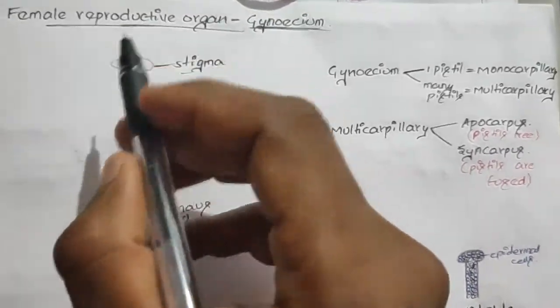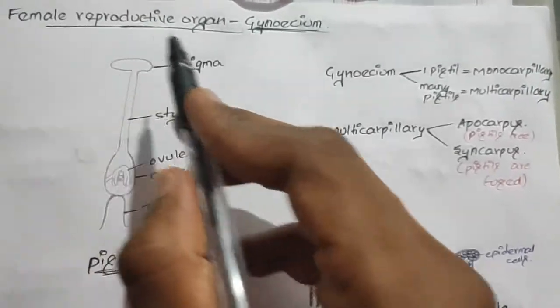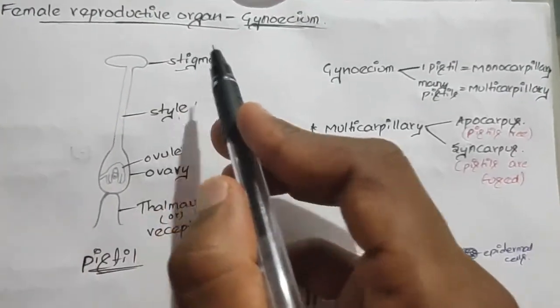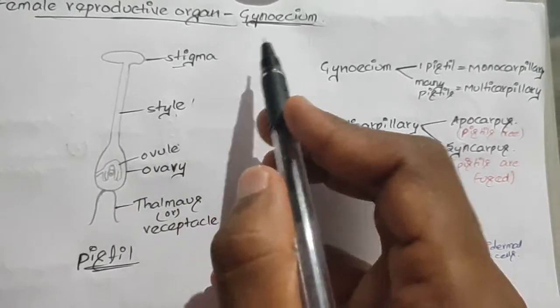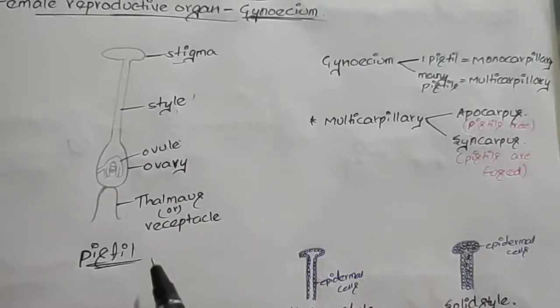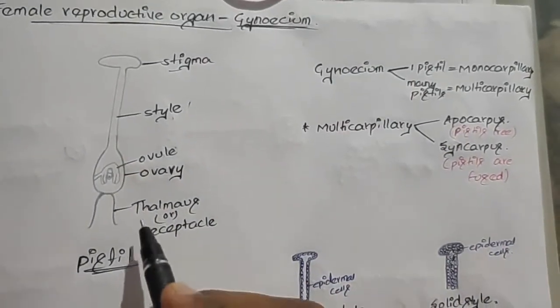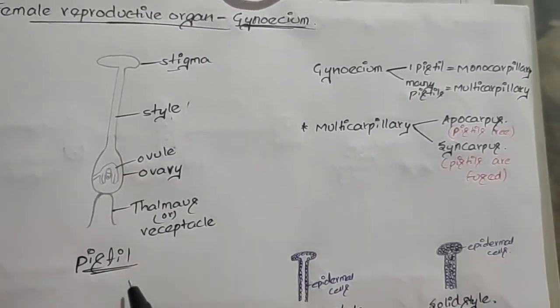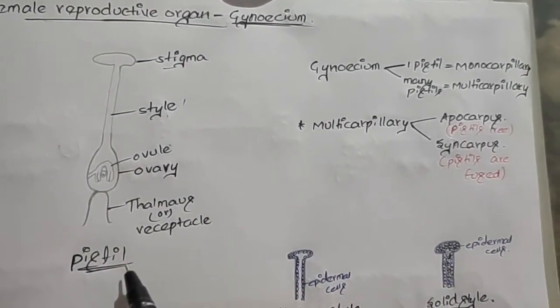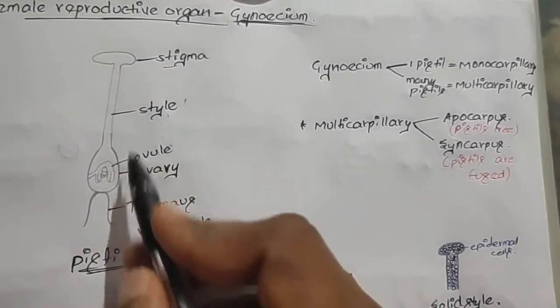In this video we are going to discuss about the female reproductive organ of angiosperms, that is gynoecium. The female reproductive organ is the pistil, and each pistil has three parts.